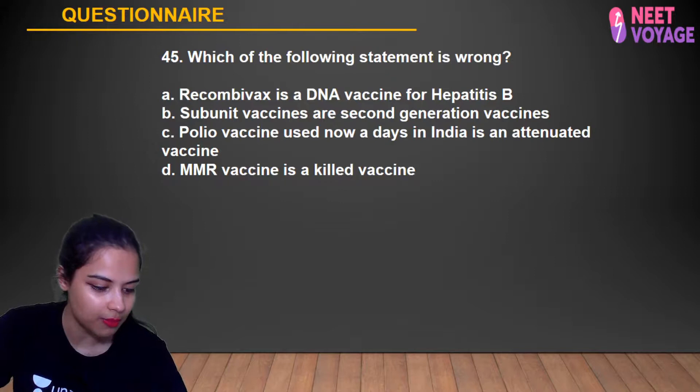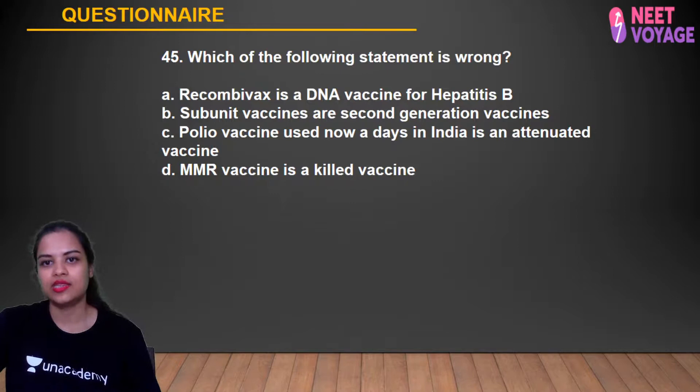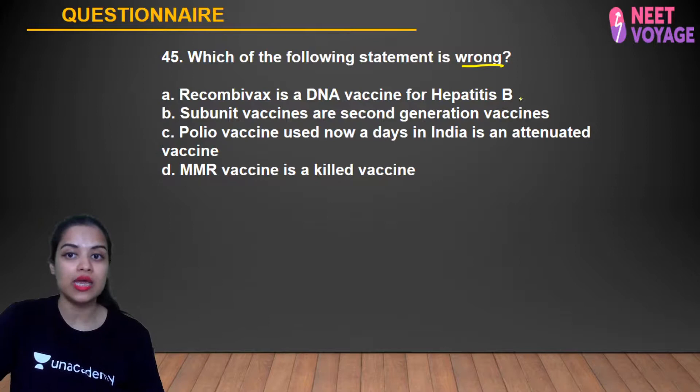Question 45 from Biotechnology: Recombivax is a DNA vaccine developed for Hepatitis B. This is a recently developed recombinant vaccine. The correct answer identifies Recombivax as a vaccine for Hepatitis B.